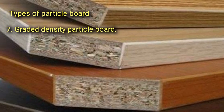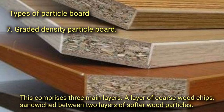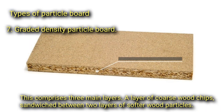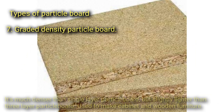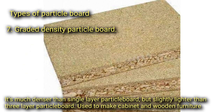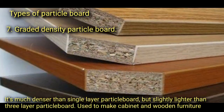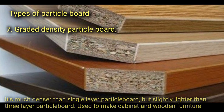Graded density particle board comprises three main layers. A layer of coarse wood chips is sandwiched between two layers of softer wood particles. It is much denser than single layer particle board, but slightly lighter than three layer particle board, and is used to make cabinets and wooden furniture.